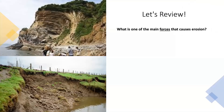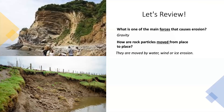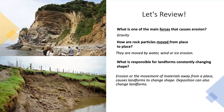Let's review. What is one of the main forces that causes erosion? Gravity is one of the main forces that causes erosion. How are rock particles moved from place to place? They are moved by water, wind, or ice erosion. What is responsible for landforms constantly changing shape? Erosion — the movement of materials away from a place — causes landforms to change shape. Deposition can also change landforms.